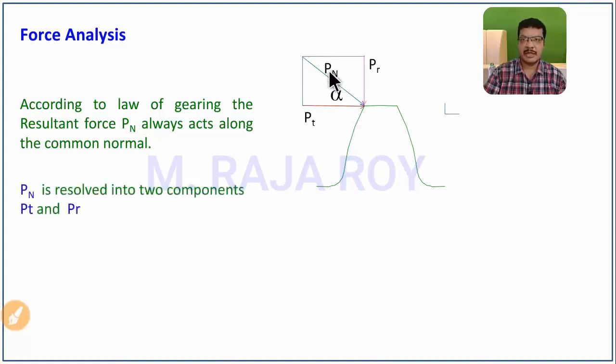If you split Pn into its rectangular components, one component acts along the tangential direction, called Pt. Another component, Pr, acts along the radial direction of the gear teeth.